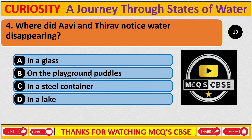Where did Avi and Thrive notice water disappearing? The correct answer is B: On the playground puddle.